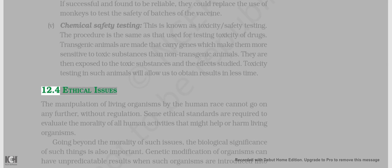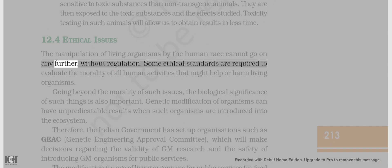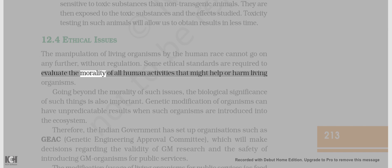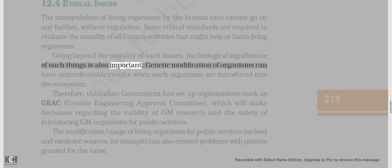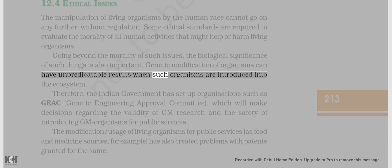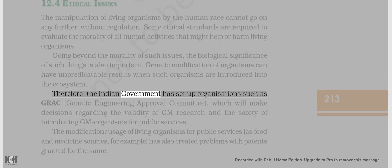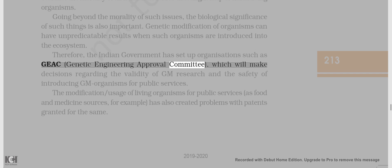12.4 Ethical Issues. The manipulation of living organisms by the human race cannot go on without regulation. Some ethical standards are required to evaluate the morality of all human activities that might help or harm living organisms. Going beyond morality, the biological significance of such things is also important. Genetic modification of organisms can have unpredictable results when such organisms are introduced into the ecosystem. Therefore, the Indian government has set up organizations such as GEAC, Genetic Engineering Approval Committee, which will make decisions regarding the validity of GM research and the safety of introducing GM organisms for public services.